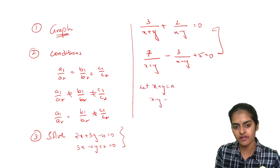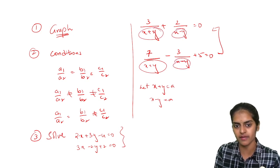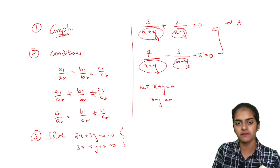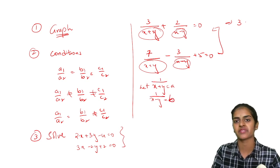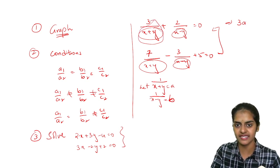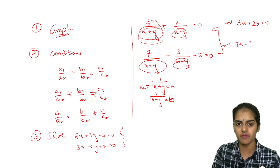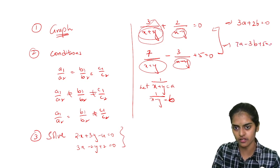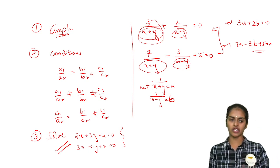What will you do? Let x plus y equal to a, x minus y equal to b. The denominators are common: x plus y, x minus y. Then this equation will become 3a plus 2b equal to 0, and then this will be 7a minus 3b plus 5 equal to 0. Now this is same like the third question, so you will solve it.